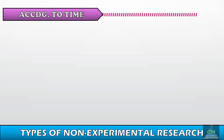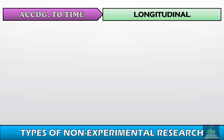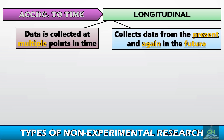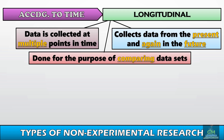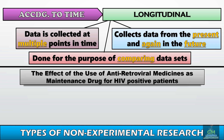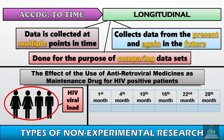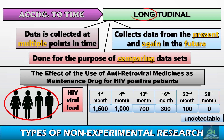Another type of non-experimental research design according to time dimension is longitudinal research. In longitudinal research, data is collected at multiple points in time — the researcher collects data from the present and again in the future to compare data sets. For example, a study on the effect of antiretroviral medicines as a maintenance drug for HIV-positive patients would record participants' HIV viral load before giving the medicines, then monitor it on a specific schedule. This process takes a long time, hence the term 'longitudinal.'